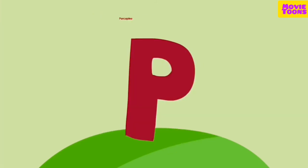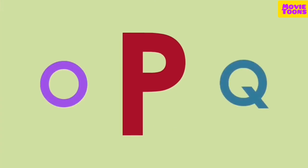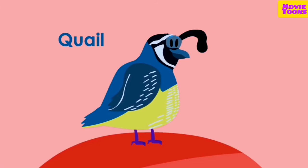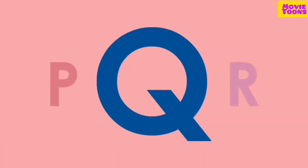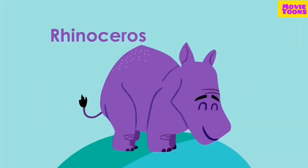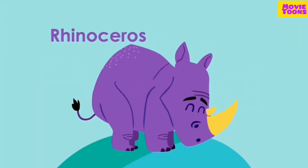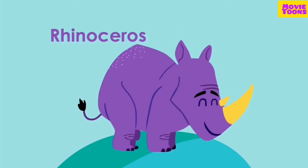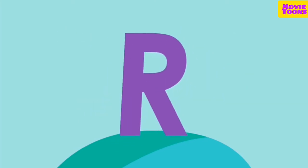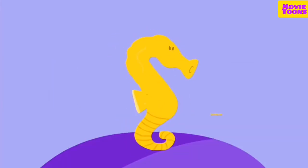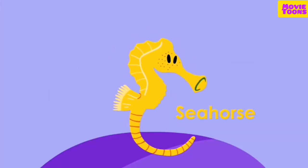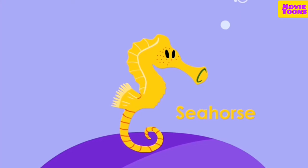P is for porcupine. P. Q is for quail. Q. R is for rhinoceros. R. S is for seahorse. S.